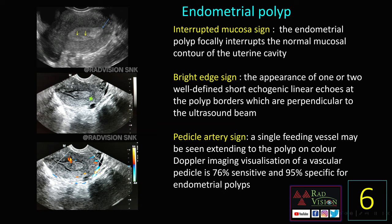The sixth case is an endometrial polyp. You can see the endometrial polyp and the feeding vessel or pedicle artery sign, which is classical for endometrial polyps. Three other signs to remember: the interrupted mucosa sign, where the polyp interrupts the normal mucosal pattern in the uterine cavity; the bright edge sign, where two bright echogenic linear echoes are seen at the polyp borders perpendicular to the ultrasound beam; and the pedicle artery sign or feeding vessel sign, which is 76% sensitive and 95% specific for endometrial polyps.